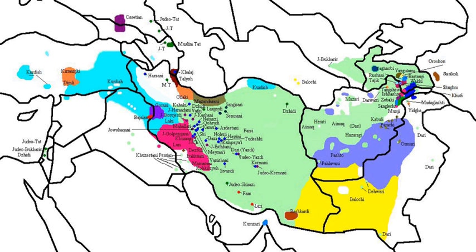The variety spoken in Karachi also has nasalized vowels, most importantly ã (a-tilde).